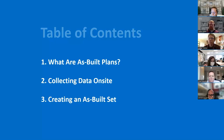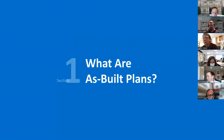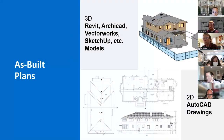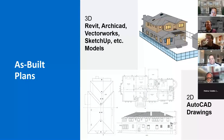Today we'll be covering best practices for surveying, drafting, and modeling of as-built plans. We will cover what are as-built plans, processes of gathering on-site data, and how to create an as-built set. In simpler terms, as-built plans are drawings or models that accurately present the existing dimensions and conditions of a building. Today we'll focus on the production of as-built plans in 3D Revit and 2D CAD files, though numerous other design softwares are available for drafting as-built plans.